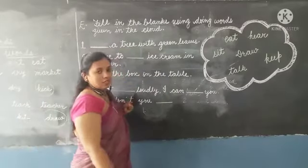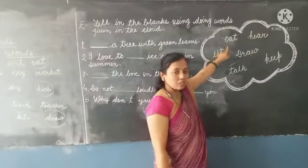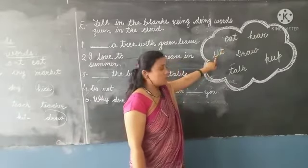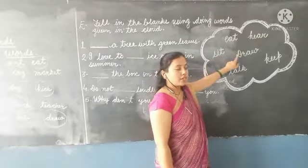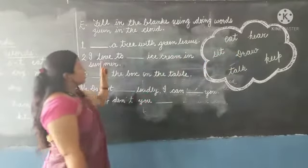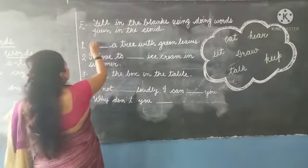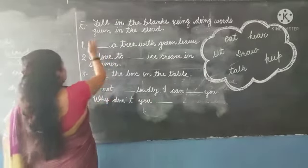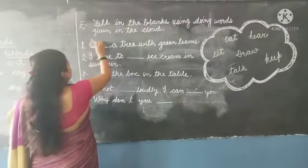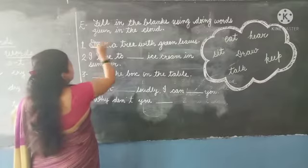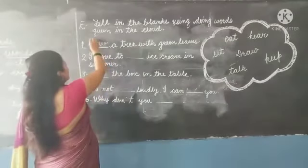First one: blank a tree with green leaves. From the cloud words - eat, sit, hair, draw - yes, 'draw' fits. Draw a tree with green leaves. We write D in capital letter because a sentence always starts with a capital letter. So: Draw a tree with green leaves.